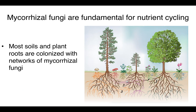Understanding nutrient cycling through ecosystems is fundamental in plant ecology. Plants cycle the vast majority of nutrients through ecosystems, but most of these nutrients plants acquire from soils are not obtained through their roots. Rather, plants obtain most of their nutrients through mutualistic mycorrhizal fungi. Mycorrhizal fungi form extensive networks of hyphae that colonize both soils and plant roots. These hyphae act as channels, funneling nutrients from soils into plant roots, and in exchange for nutrients, plants provide mycorrhizal fungi with carbohydrates.